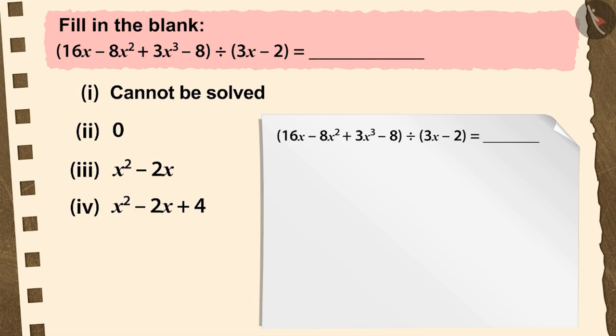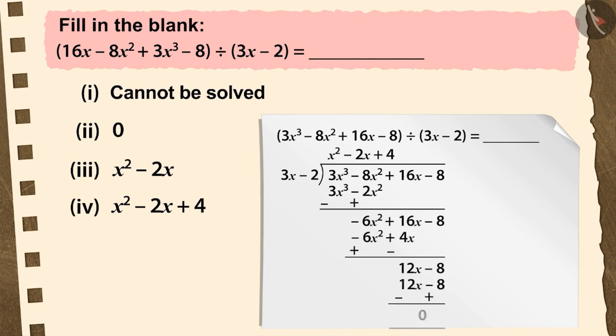We learned in the previous video that polynomials must be in standard form to start the division process. Let us write this polynomial in standard form and complete the division process. By performing this, we get the quotient x squared minus 2x plus 4.